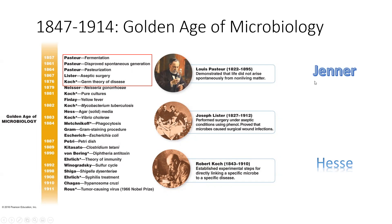Jenner had a really important role in the smallpox vaccine. As a medical student, he noticed that milkmaids who got cowpox from the cows they milked would not get smallpox — they were immune. It turns out the viruses are very structurally similar, so the immune response recognizes smallpox even if it has only been exposed to cowpox. This paved the way for understanding immunizations and exposing people to weakened amounts of smallpox to prime the immune system so that when they encountered smallpox naturally, they would be protected.